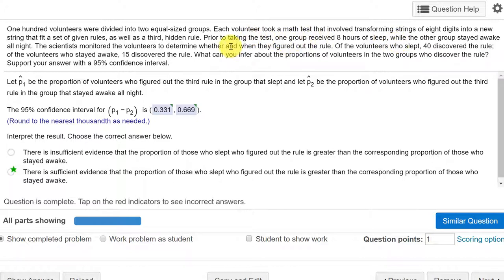And the scientists want to know if there's a difference in the proportion of volunteers in each of the two groups who discovered the rule. And they said can you infer the proportions using a 95% confidence interval.